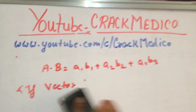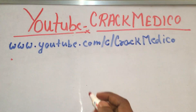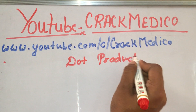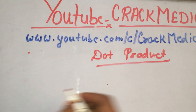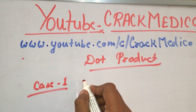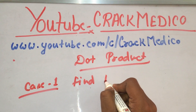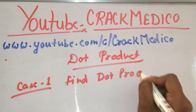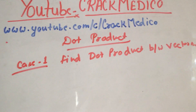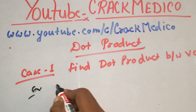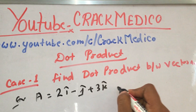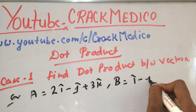On the dot product, two types of questions are asked, and they occur in every exam. Case 1: find the dot product between two vectors. For example, suppose vector A is equal to 2i minus j plus 3k and vector B is equal to i minus j.